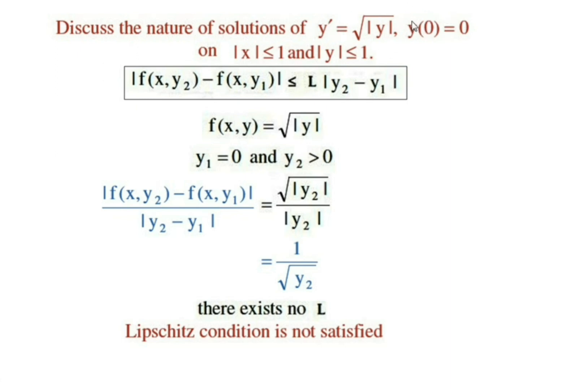One solution is a zero solution, y(x) = 0. And another solution is a non-zero solution, that is, y(x) = x²/4.